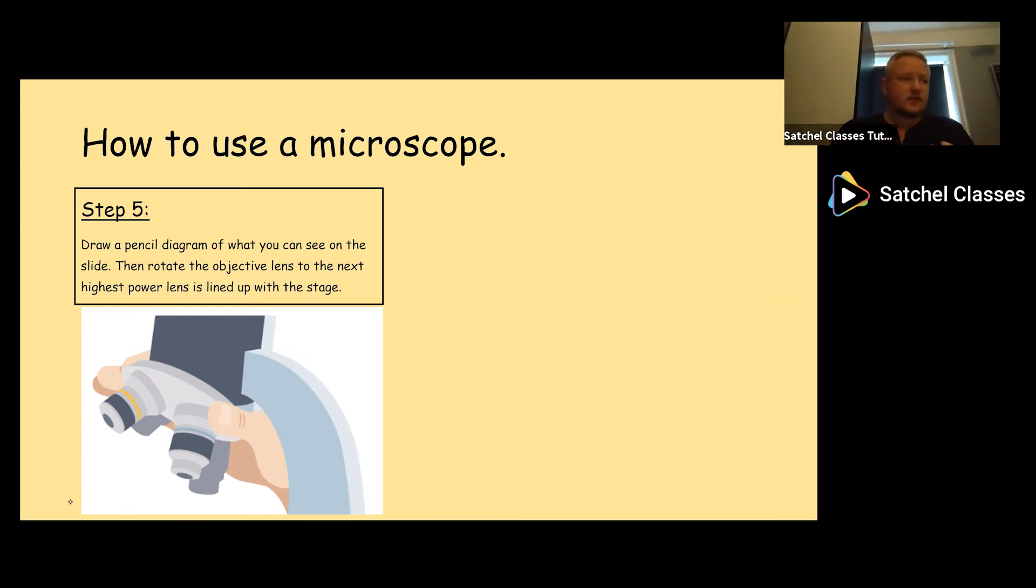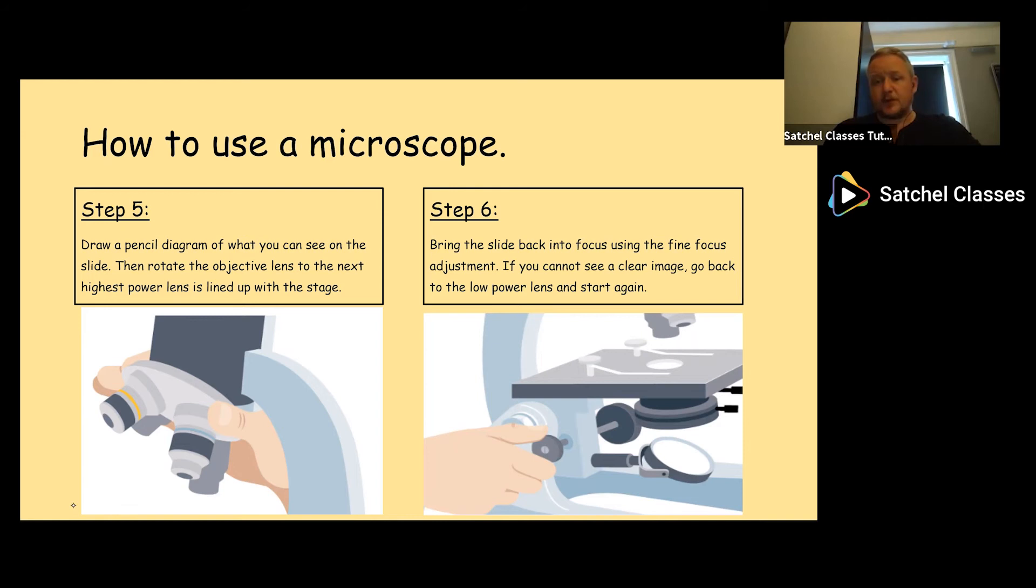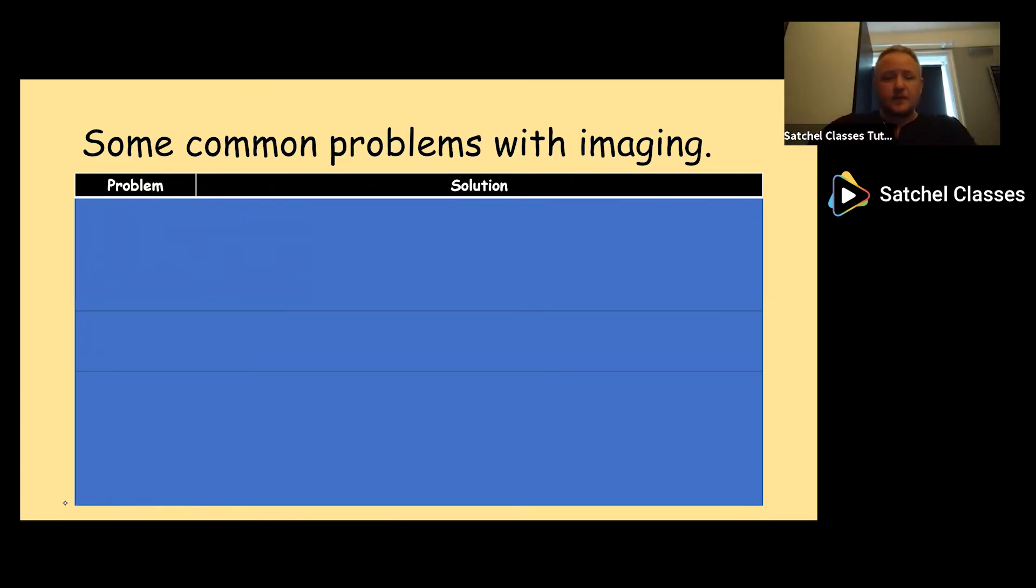Step five, you should always be able to draw a pencil diagram of what you can see on the slide. Pencil diagrams are easy to do, you just literally draw the structures you can see. If you see little circles or hexagonal boxes in the case of onion cells, then draw what you can see as simply and clearly as you can. Label any areas of interest and if you know which structure you're drawing, it's good practice to label them too. Once you've done that drawing, rotate the objective lens to the next highest power lens. You should find your image is slightly blurry, but then use your fine focus to bring the slide back into clear focus with higher magnification. If you use the coarse focus rather than the fine focus and can't get that clear image, the easiest thing to do is go back to the lowest power lens and start again.